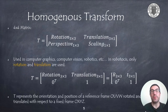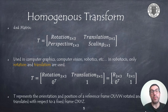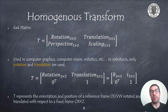A homogeneous transformation matrix is a 4x4 matrix that includes the four elements mentioned before. They are used in applications such as computer graphics, vision systems, and robotics, among others. In robotics we use a simplification in which we only consider rotation and translation, and therefore for us, a homogeneous transformation matrix will always look like a 3x3 submatrix representing the orientation of a reference frame OUVW with respect to the fixed frame OXYZ, and the translation vector of such mobile frame.